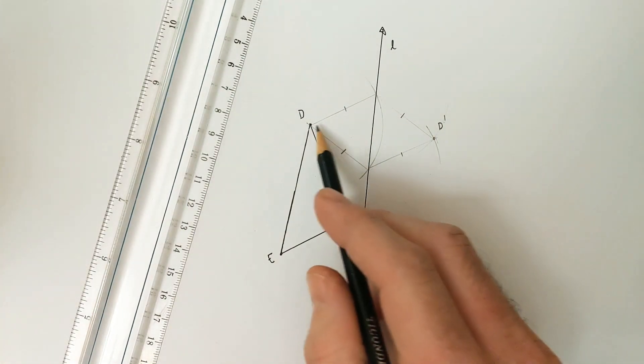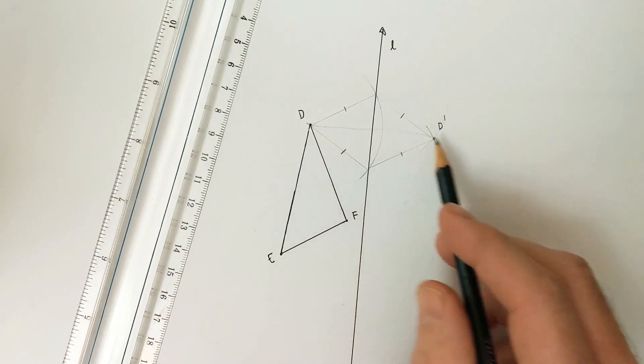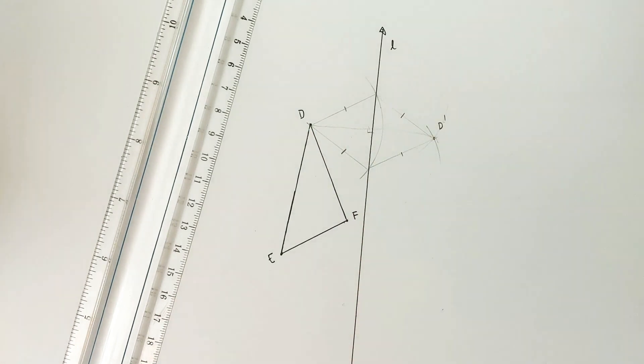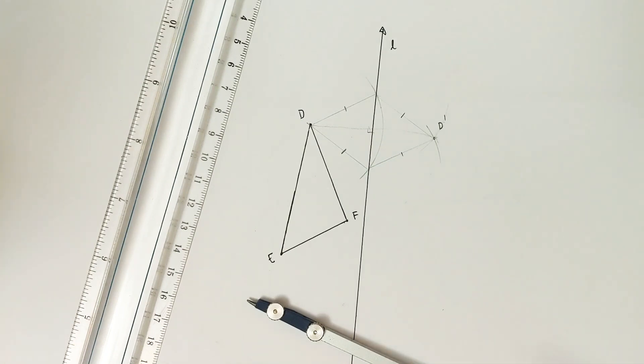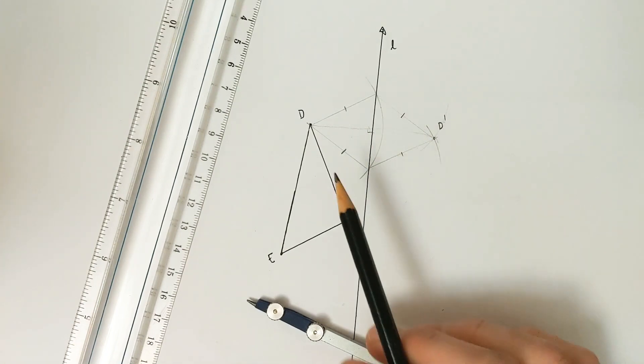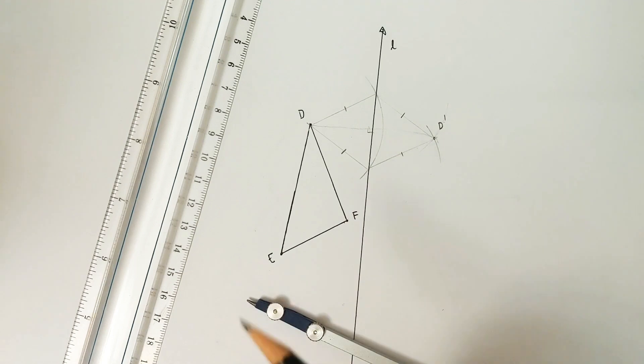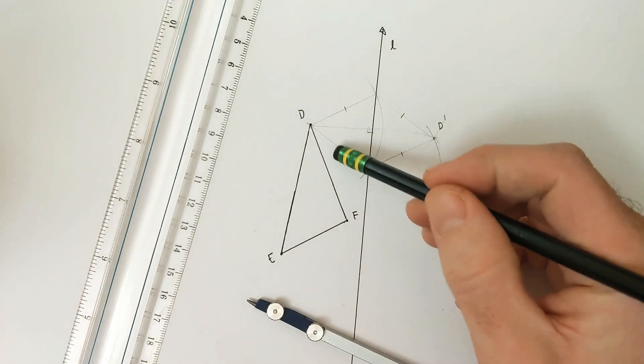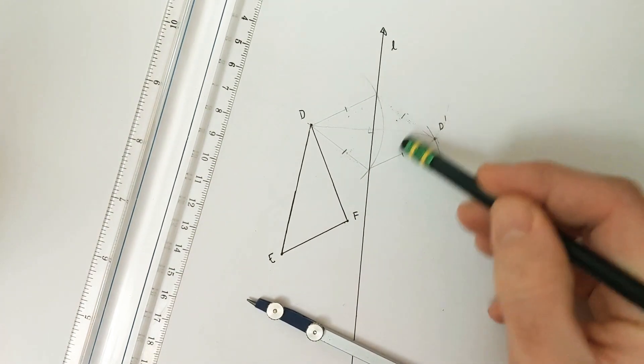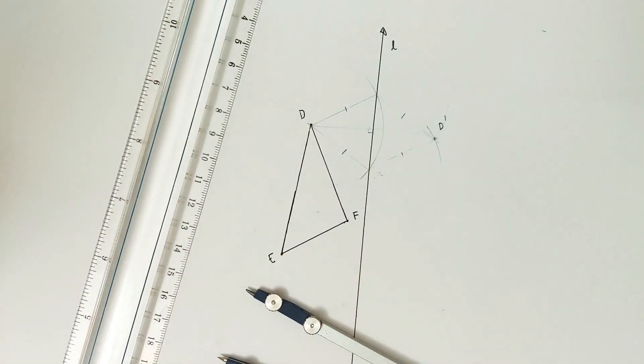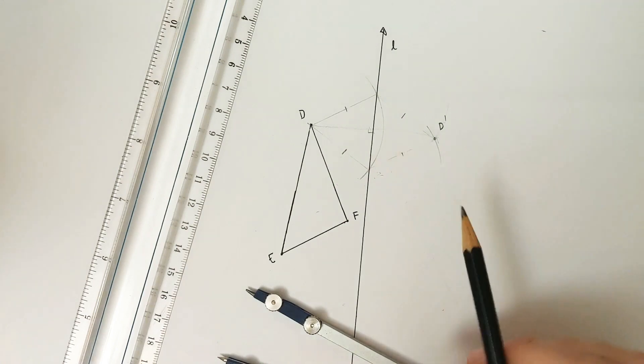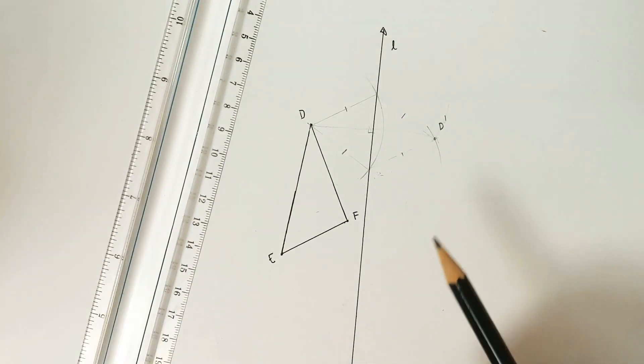And there we go. And then we're just taking advantage of some properties of isosceles triangles, where essentially we can think of these as two right triangles, which gives us our perpendicular line there. Obviously, you wouldn't construct all of these lines in a regular reflection. I just drew these in here for illustrative purposes. So on a real construction, you wouldn't need to draw any of these triangles. We were just doing that for demonstration to see where or why exactly this construction works. Because I think it's a pretty interesting one and kind of nice to understand why it works.